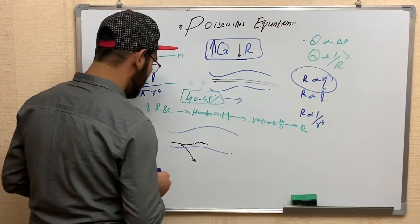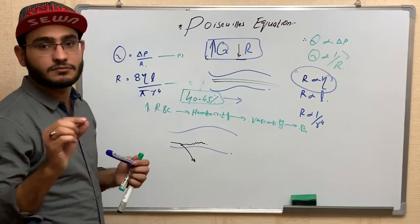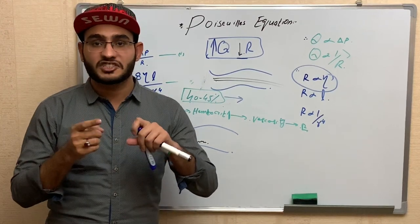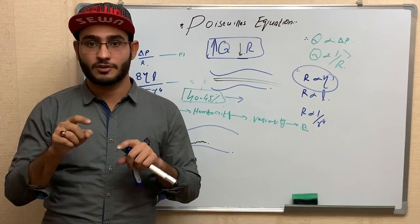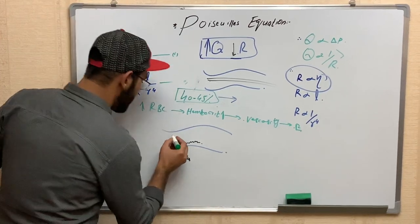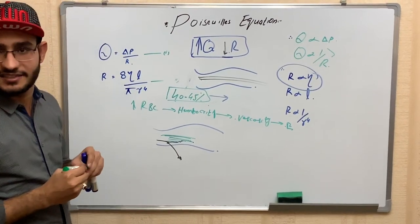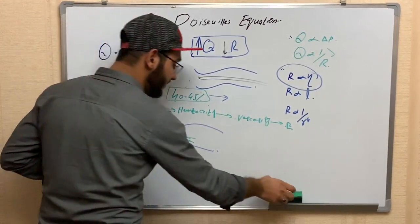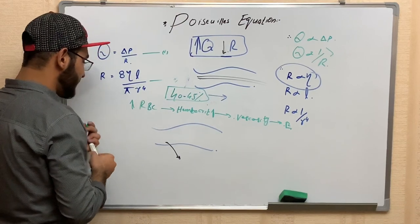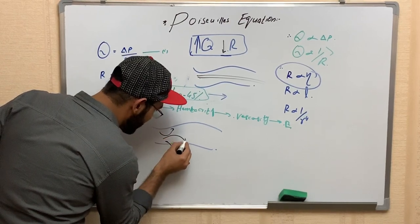When blood flow increases due to decreased resistance, it disturbs the laminar flow. This converts the flow into turbulent flow. Turbulent flow is an irregular flow. As the speed of blood increases, it causes the formation of turbulent flow within the blood vessel.